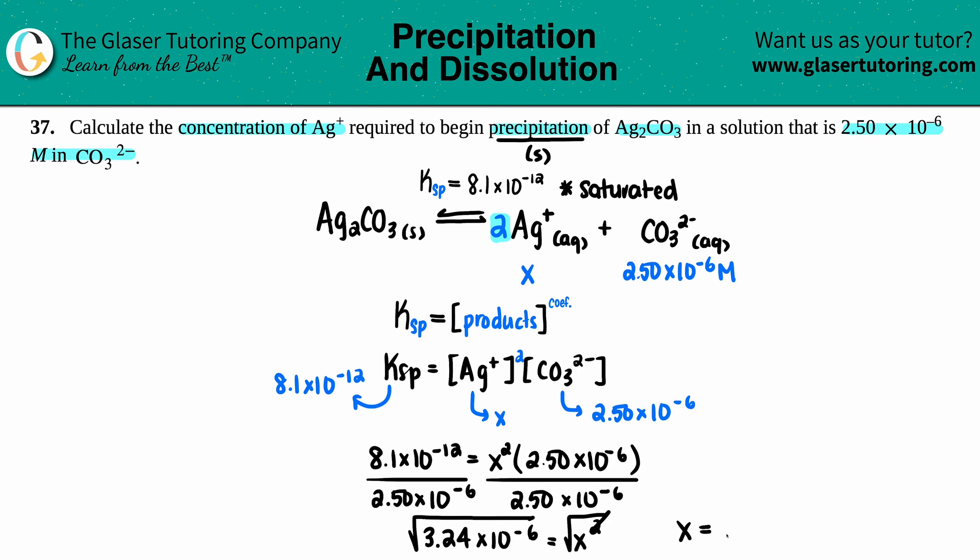There we go, that looks much better: 1.8×10⁻³ molarity. Ag+ was just x, so since Ag+ we labeled was just x, it would just be that value, 1.8×10⁻³ molarity. That is the answer.